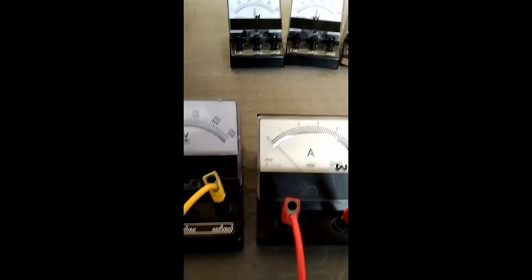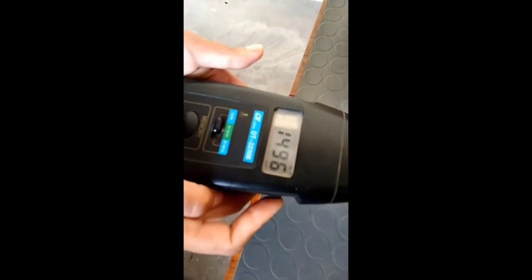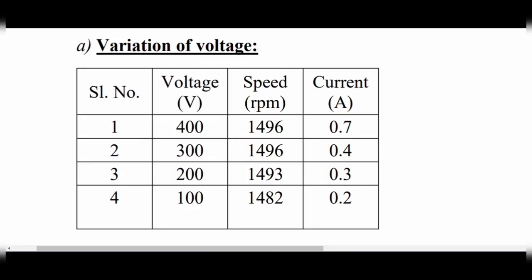In this practical, rated voltage of 400 volts is given and its speed is noted. We are going to decrease the supply voltage and note its RPM. This is the reading of this practical, and you can see that as supply voltage decreases, RPM also decreases.